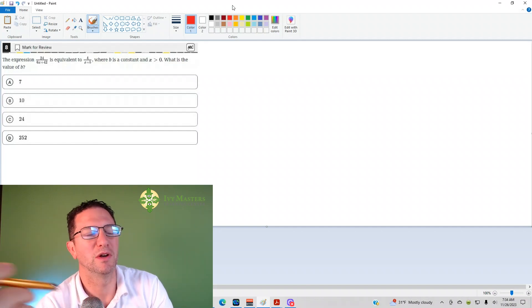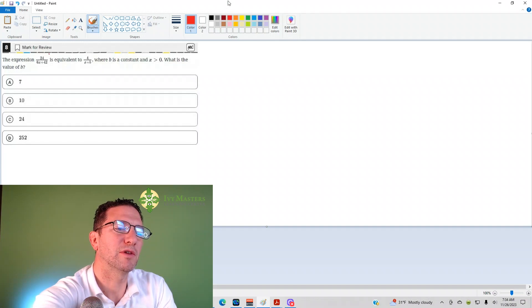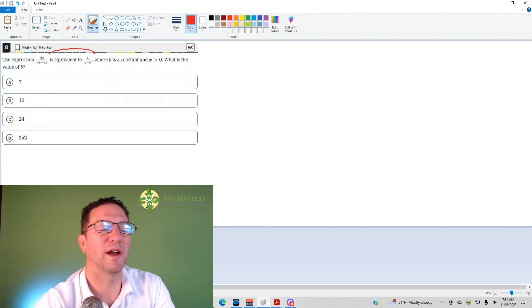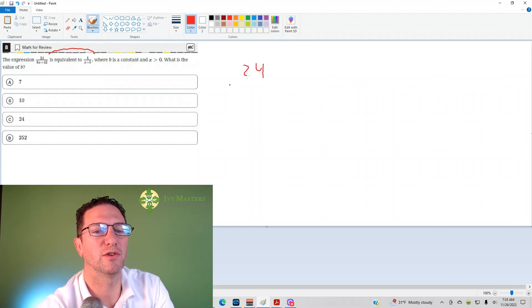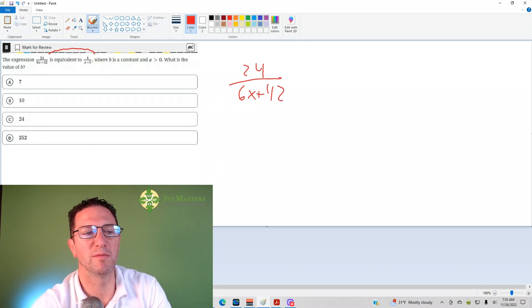So, what could you do? The easiest way to do this is you look at the relationship between what you're given and what you're asked for. And what you might notice is how do you get from 24 to 4? You divide by 6.